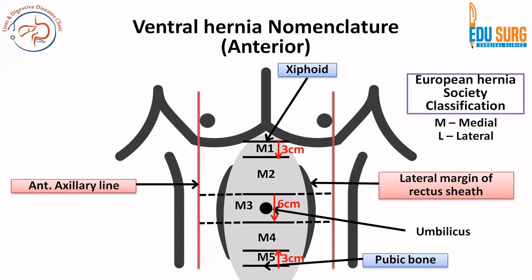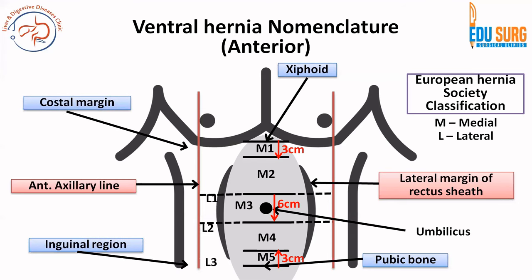When you extend the two umbilical lines laterally towards the anterior axillary line, you get L1, L2, and L3. The margins for these are the costal margin superiorly and the inguinal region inferiorly. L1 is when the hernia is above 3 centimeters above the umbilicus, and L3 is below 3 centimeters below the umbilicus. Lateral to the anterior axillary line, all hernias are L4. So that is the ventral hernia nomenclature — a fairly commonly asked question and something that has been given to standardize ventral hernia classification, so you should know it.